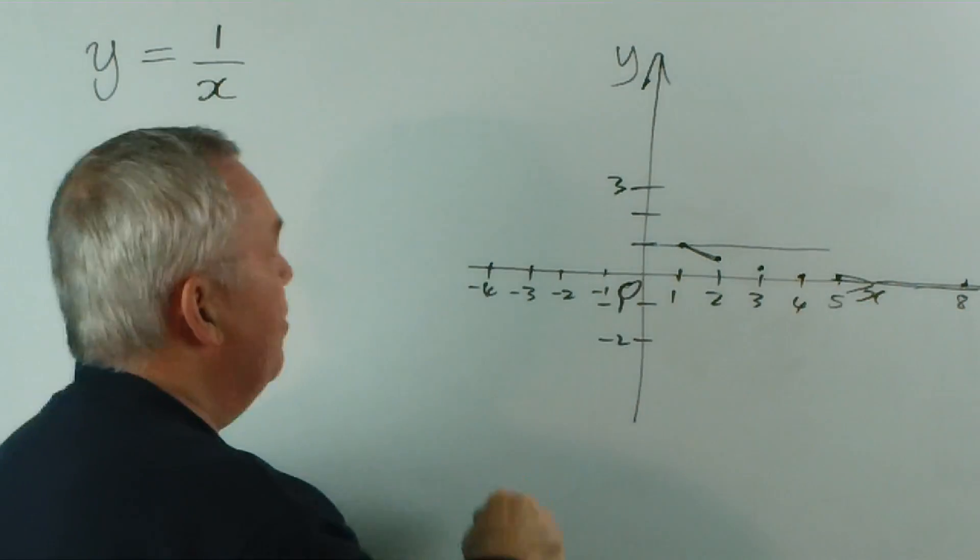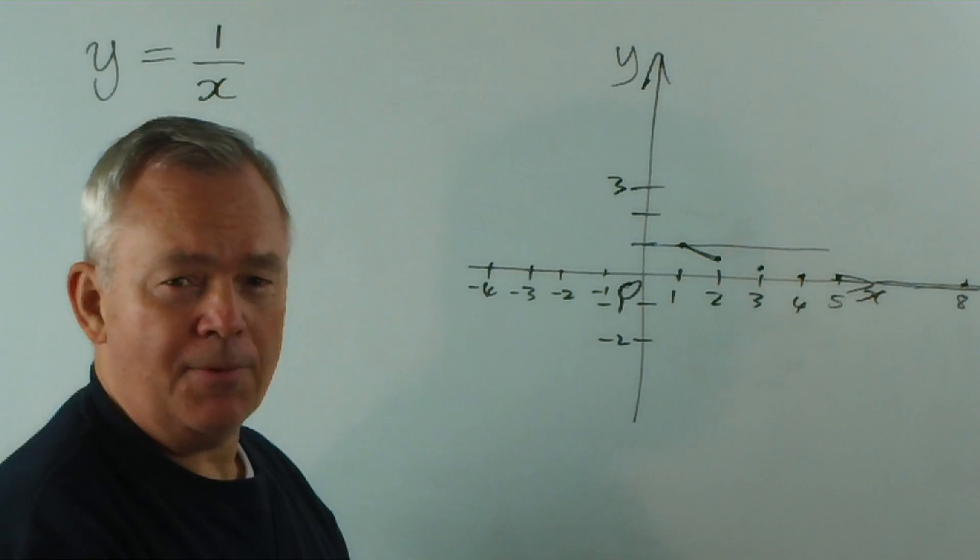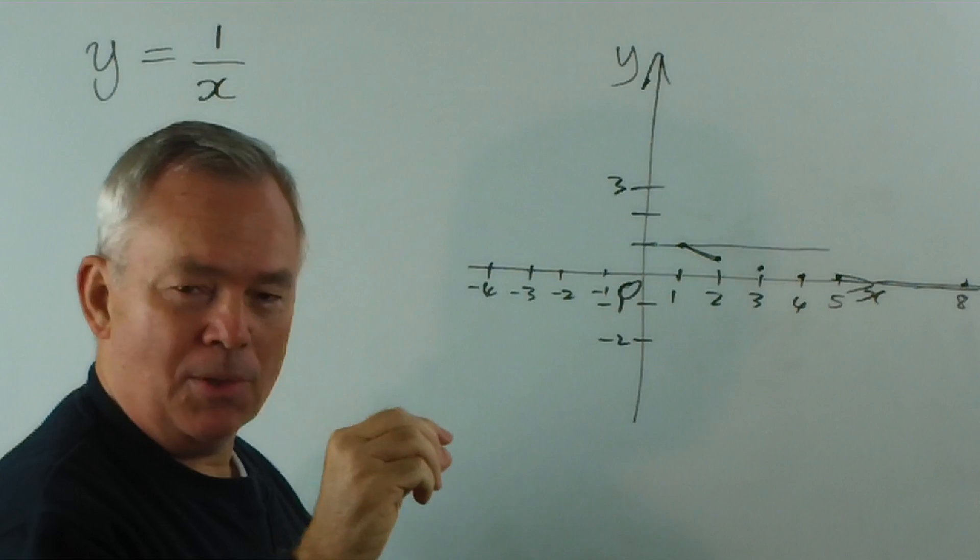If you go out to a million, you would have a fraction of 1 over 1 million, which of course you really couldn't draw on a graph, but it still is a positive fraction.